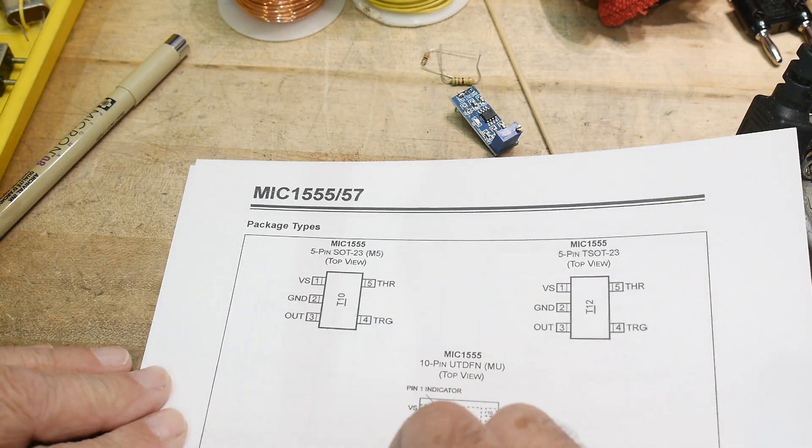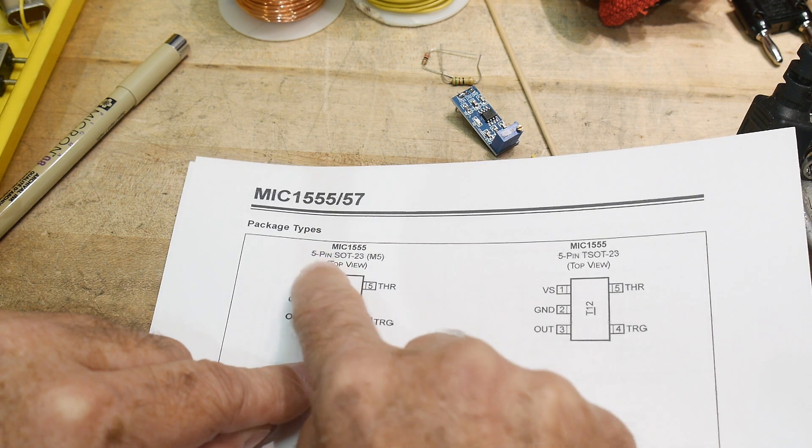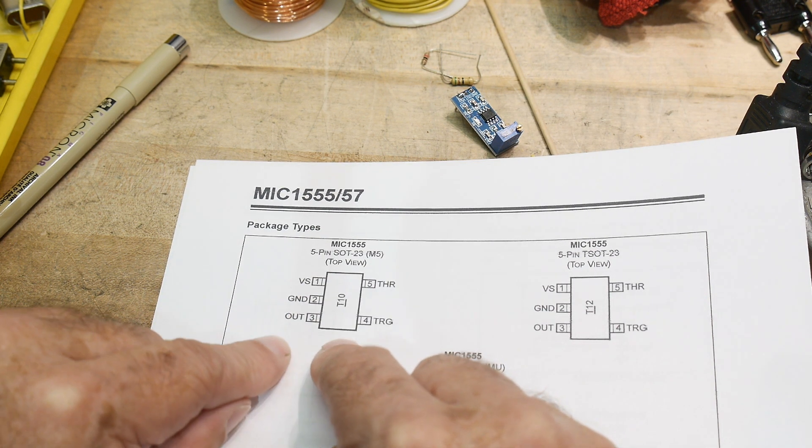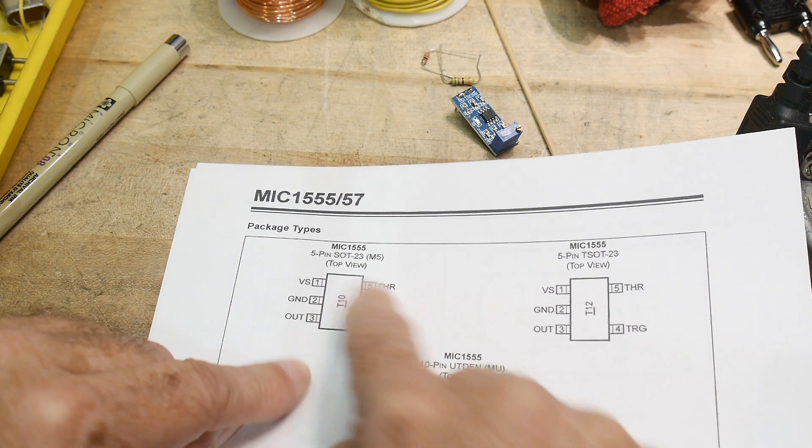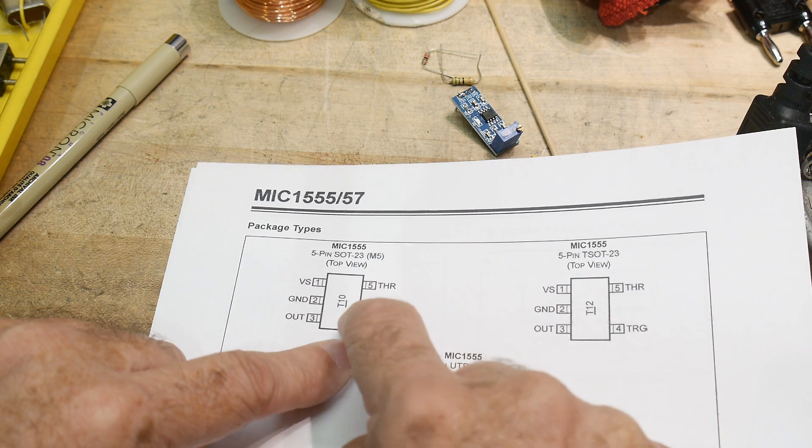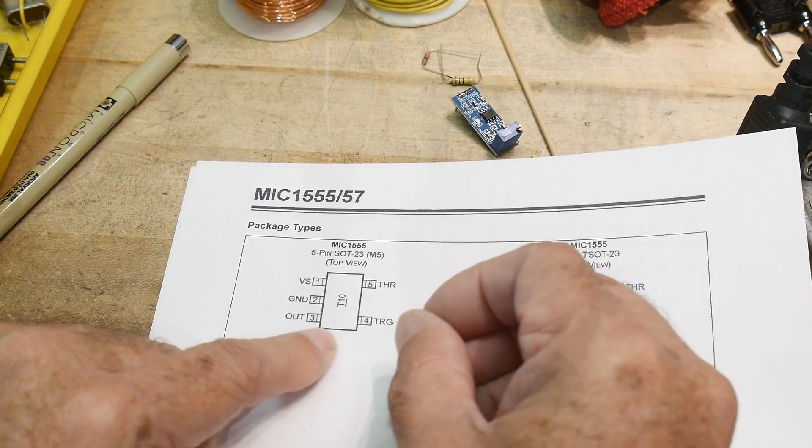So the part that we're going to be looking at today is going to be in this package. It's a SOT-23 5-pin. And it's power, ground, and output, and then threshold and trigger on the other side. So all in a SOT-23. SOT-23s are super, super, super tiny.